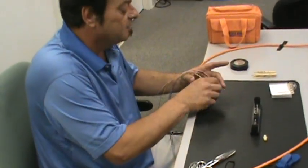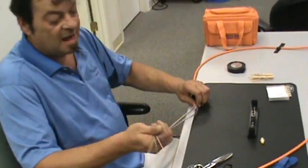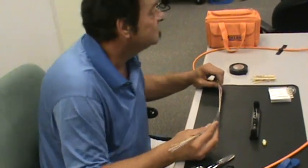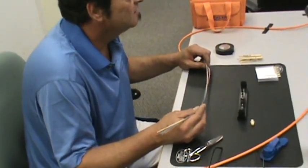All right, we've now prepped the outside jacket of one side of what we're going to be splicing.